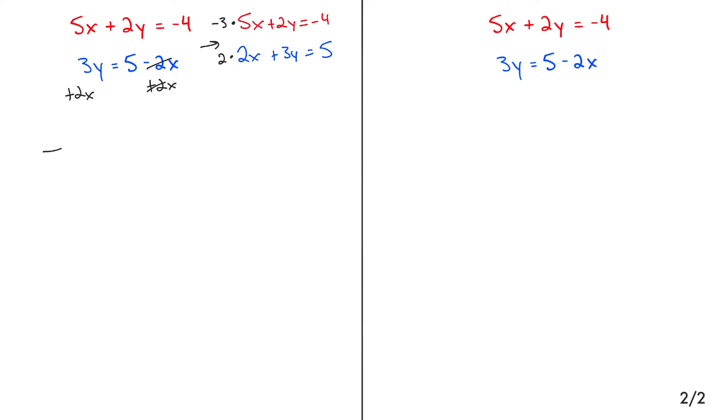Once I do that, I'm going to get a new system. I'm going to get negative 15x minus 6y is equal to negative 12, and then I'm going to get 4x plus 6y is equal to 10. Is it? You're right. Thank you.